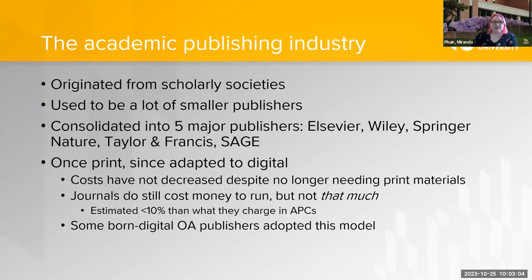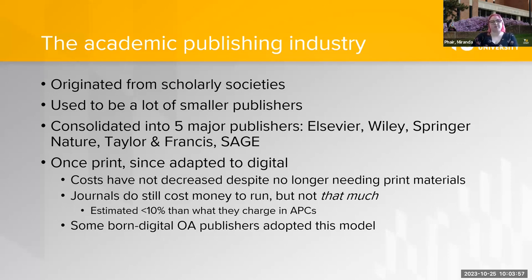To understand why this is, I have to talk a bit about the industry in general. Academic publishing originated from scholarly societies who just wanted to publish their findings. There used to be a lot of smaller, decentralized publishers around the world doing these activities. Over time — this is a very abridged history — they consolidated into five major publishers who definitely have the market share: Elsevier, Wiley, Springer Nature, Taylor & Francis, and Sage.